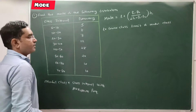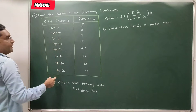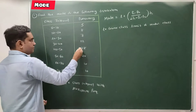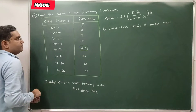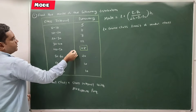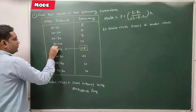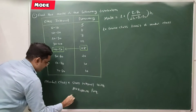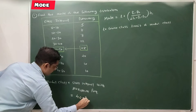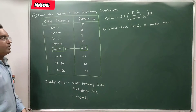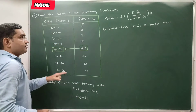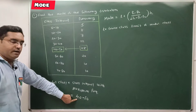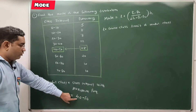The model class is the class interval with the maximum frequency. Here, 28 is the maximum frequency, and it belongs to the class 40 to 50. So 40 to 50 is our modal class.